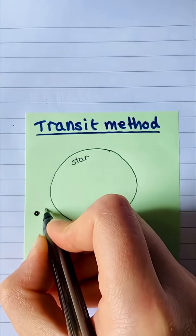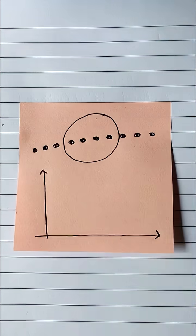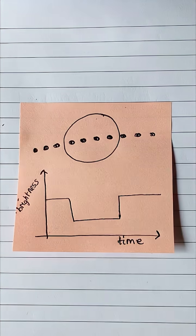The transit method measures the change in brightness of a star as an exoplanet travels in front of it. The change in brightness is caused by the planet blocking out some of the star's light.